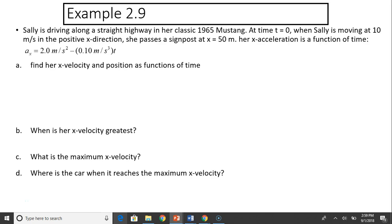Let's take a look at this example. Sally is driving along a straight highway in her classic 1965 Mustang. At time t equals 0, when Sally is moving at 10 meters per second in the positive direction, she passes a sign post at x equals 50 meters. Her acceleration is a function of time. So we are given the initial velocity and the initial position. In this case, none of them are 0. Initial velocity is 10, initial position is 50. Find her x velocity and position as functions of time.